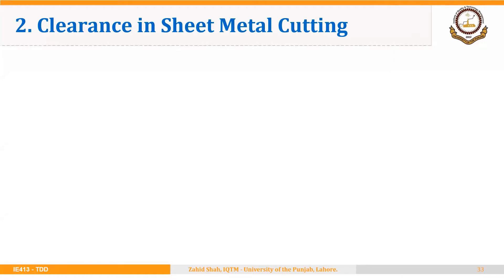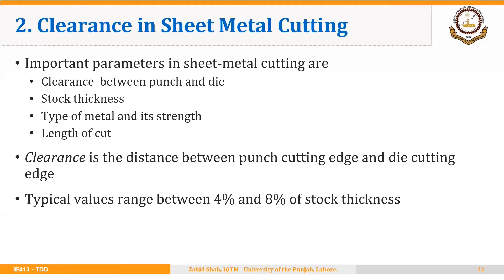Welcome back. The second important design aspect in the design of sheet metal cutting dies is the clearance between punch and die. Important parameters in sheet metal cutting are the stock thickness, the type of metal and its strength, the length of cut, and the clearance between punch and die. Clearance is the distance between the punch cutting edge and the die cutting edge. Typical values range between four percent and eight percent of stock thickness, generally mentioned as a percentage of the thickness of the sheet being cut.